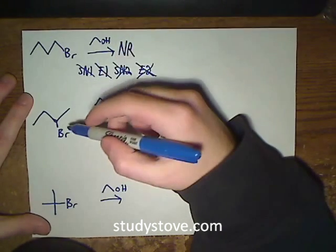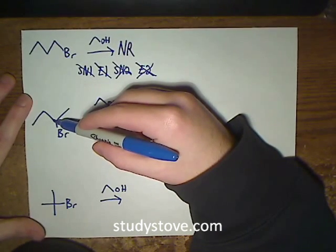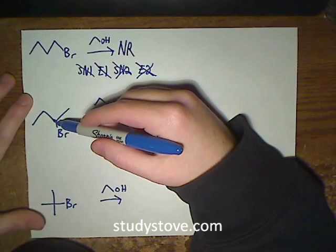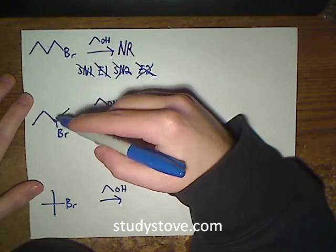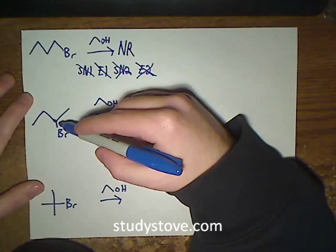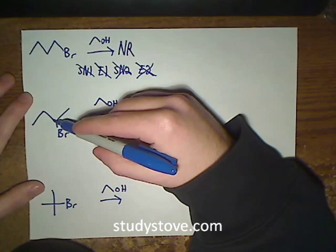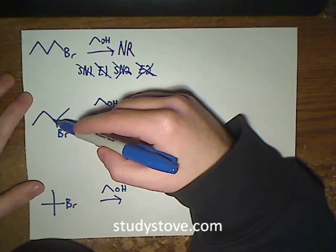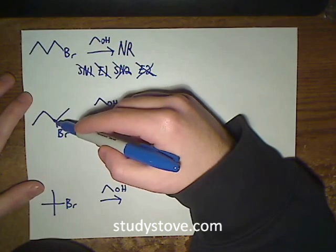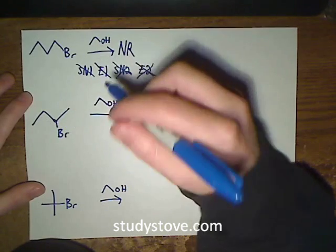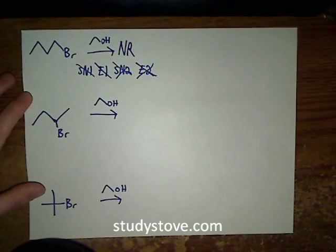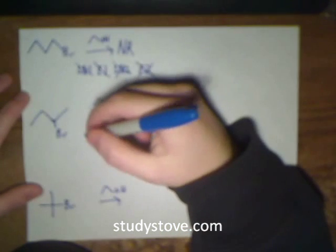Okay, on to the second one. We have a secondary carbon with a good leaving group, and in my opinion, for these questions where you need to decide what type of substitution or elimination reaction you're going to have, when the leaving group is on a secondary carbon, they're usually the most difficult. The reasoning for that is you have to go through all the factors involved in the reaction to decide what's going to happen.